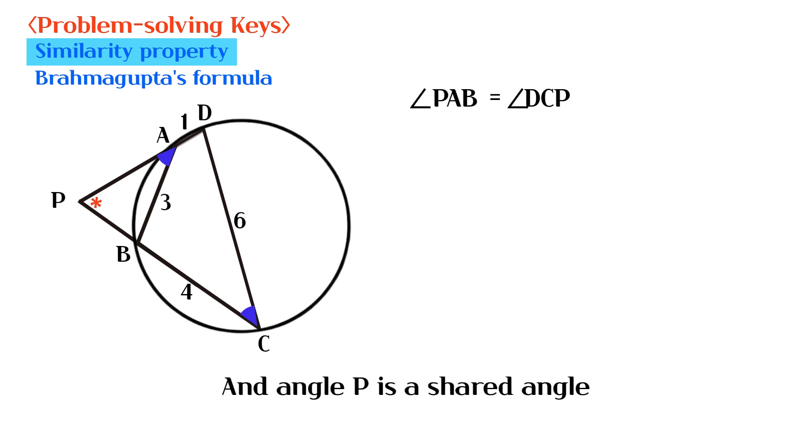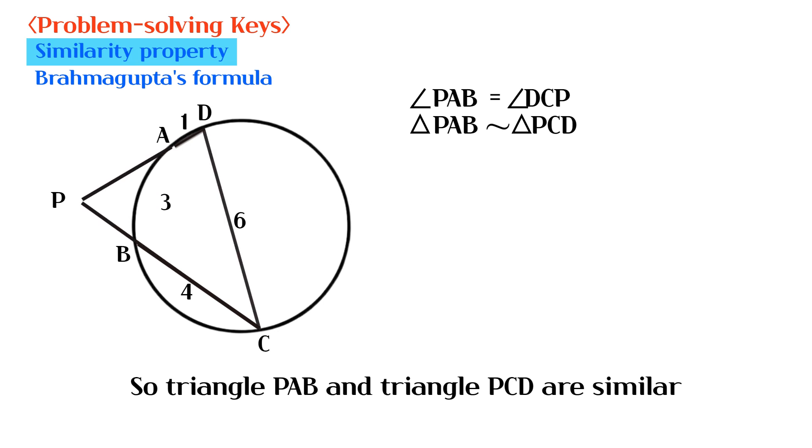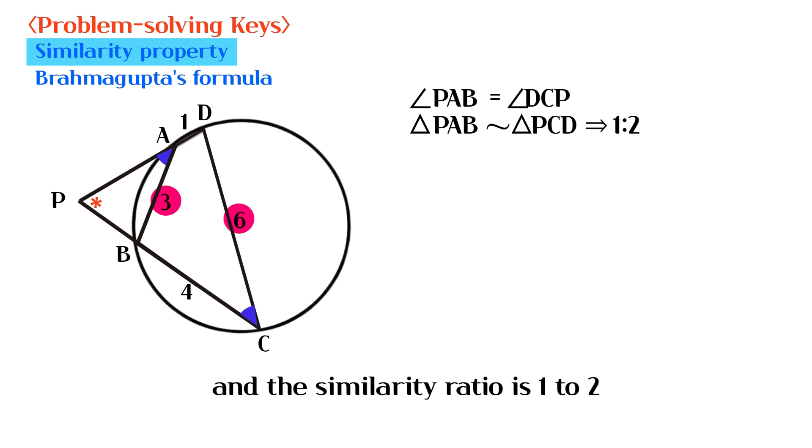And angle P is a shared angle. So triangle PAB and triangle PCD are similar, and the similarity ratio is 1 to 2.